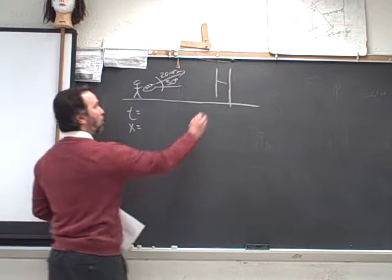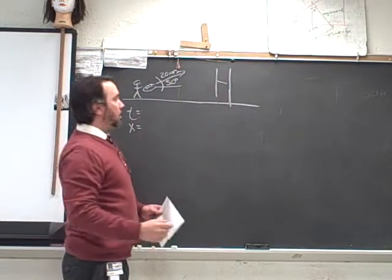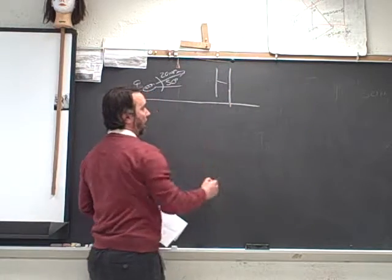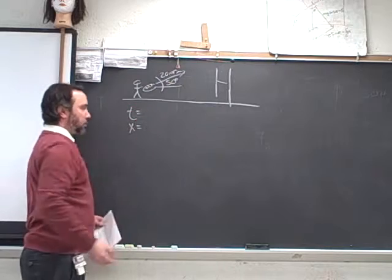And we want to know when it interacted with this plane of the field goal post. Did it go over? Did it go under? And if so, by how much? So first let's solve for time. Let's write down what we're given.